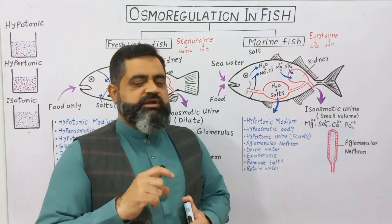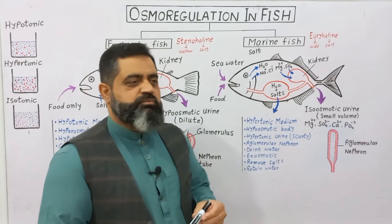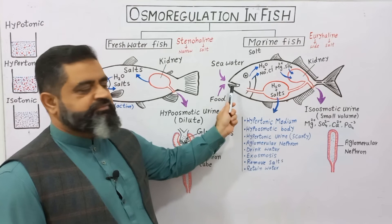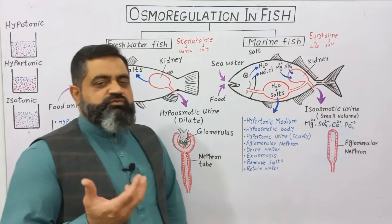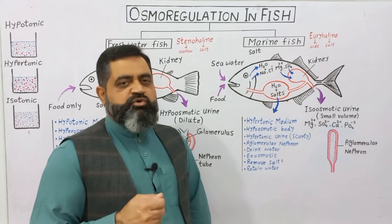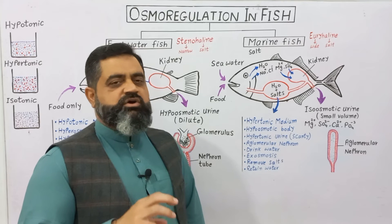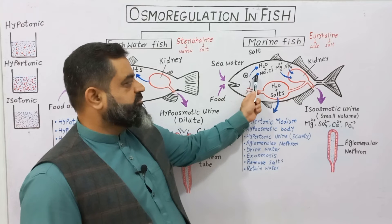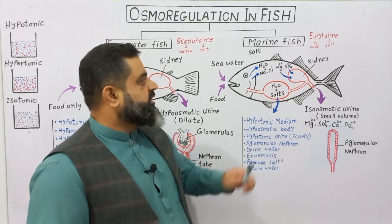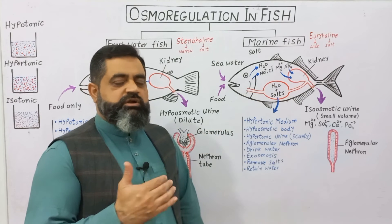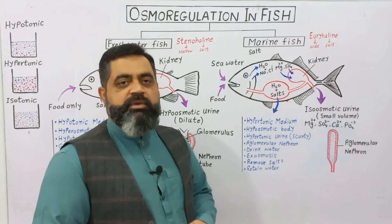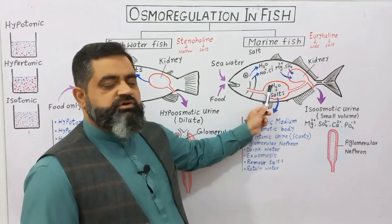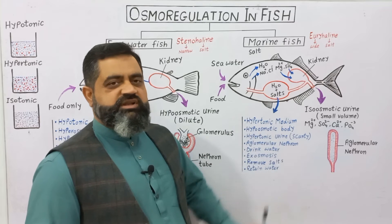Marine fish adaptations focus on retaining water and removing salts. They eat food and also drink a lot of sea water to compensate the loss of water from their body. However, drinking sea water increases salt concentration, so they have adaptations to remove excessive salt. Their gills remove sodium and chloride ions from the blood into the water. Water is also absorbed into the bloodstream from the gills to maintain water concentration in the blood. Their digestive system absorbs maximum water and removes salt.